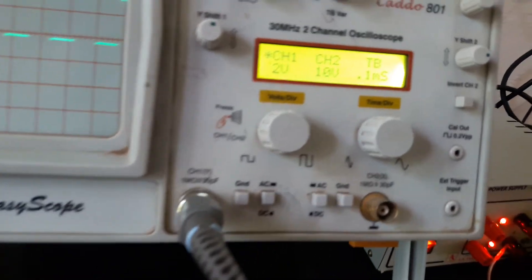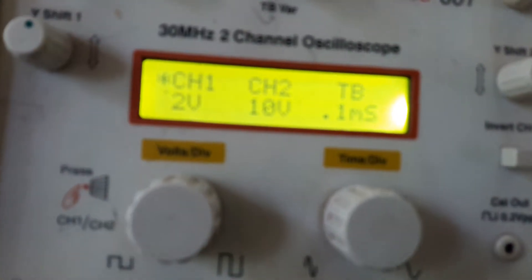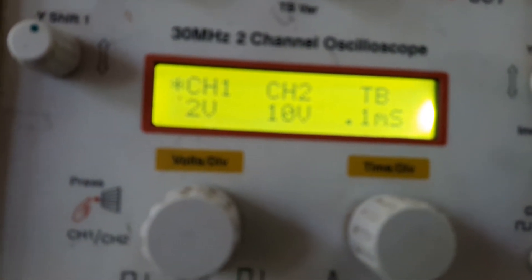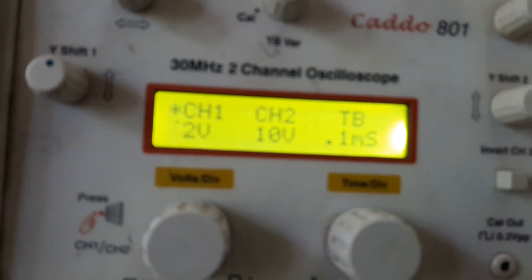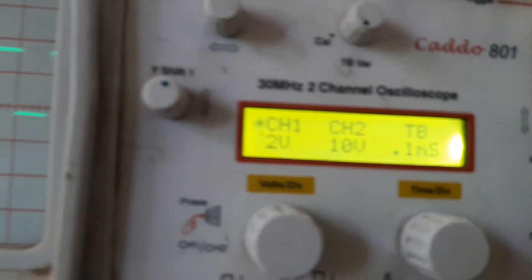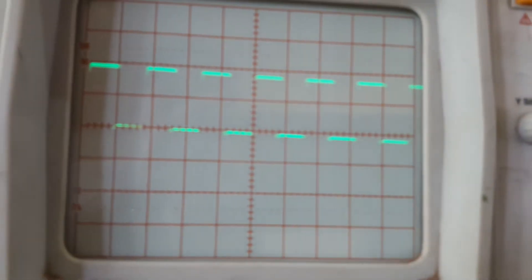Now, CRO connections. Switch on the CRO and the time base I have adjusted for 0.1 milliseconds and the voltage I have kept it for 2 volts. We will get a, after releasing the ground we will get a waveform.